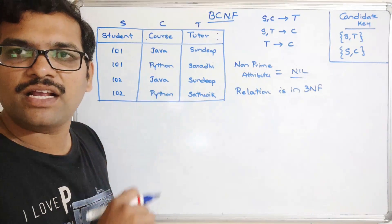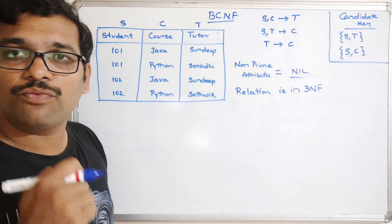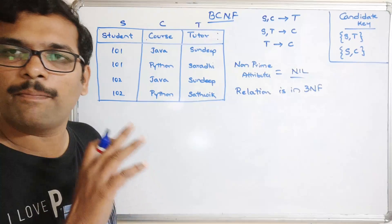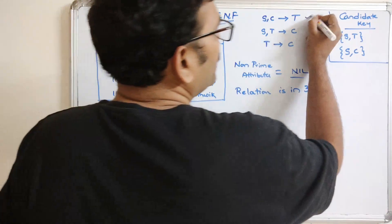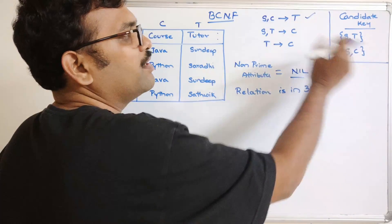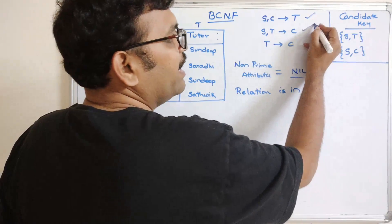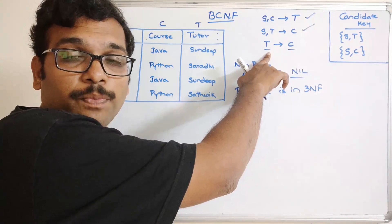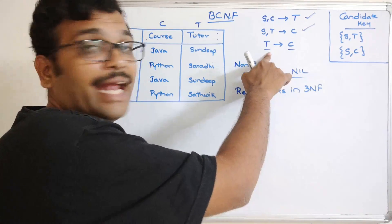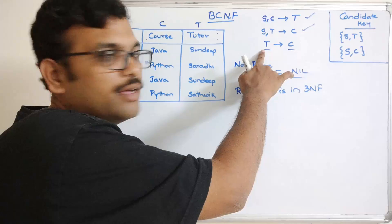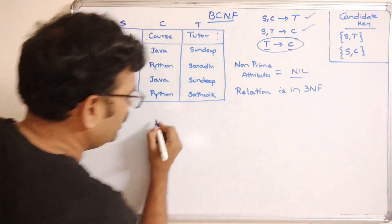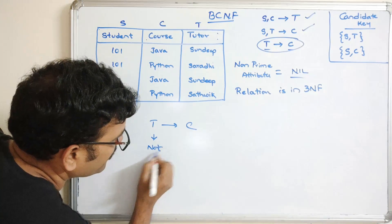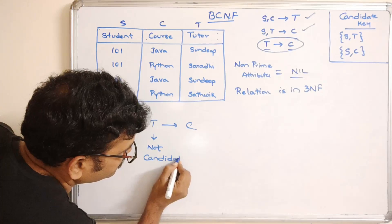Now we check for BCNF: for all functional dependencies X→Y, X should be a super key or candidate key. For S,C→T: S,C is a candidate key — valid. For S,T→C: S,T is a candidate key — valid. For T→C: here X is T, which is not a candidate key or super key — this violates the BCNF condition.